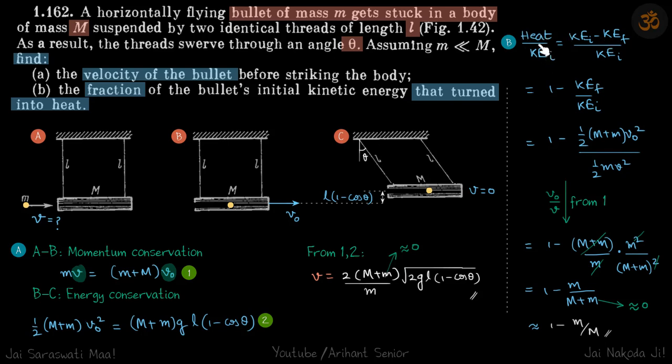So heat—this ratio we need is heat upon initial kinetic energy. Heat is initial kinetic energy minus final kinetic energy. We are talking about from A to B. Initial kinetic energy minus final kinetic energy is the heat.